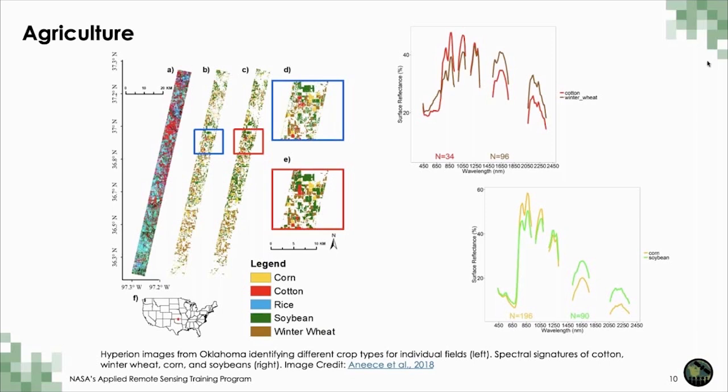This research makes a significant contribution towards understanding, modeling, mapping, and monitoring agricultural crops using data from even upcoming hyperspectral satellites — including NASA's Surface Biology and Geology mission — and contributes to building a novel, first-of-its-kind global spectral library of agricultural crops. So this was a really important research activity.